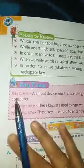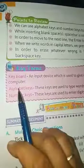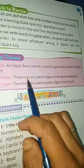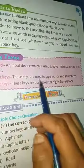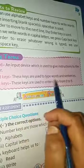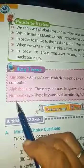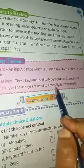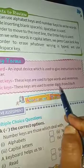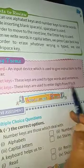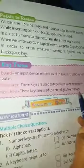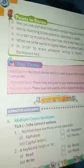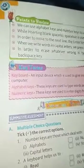Key terms: keyboard — an input device which is used to give instructions to the computer. Alphabet keys — these keys are used to type words and sentences. Numeric keys — these keys are used to enter digits from 0 to 9. Okay children, read it at your home. Thank you!